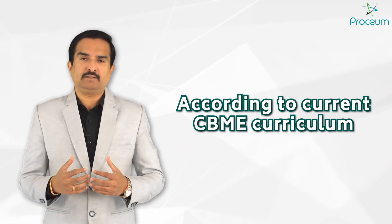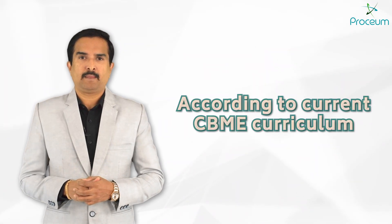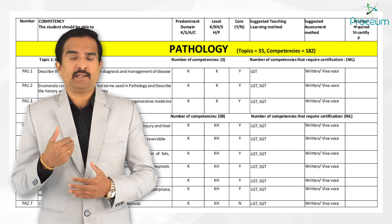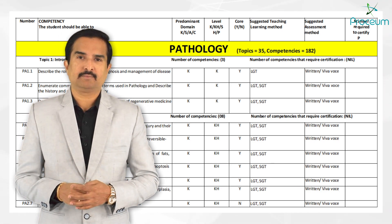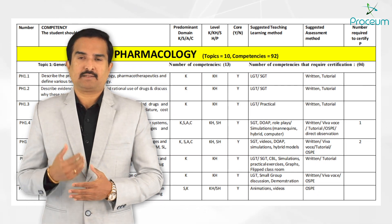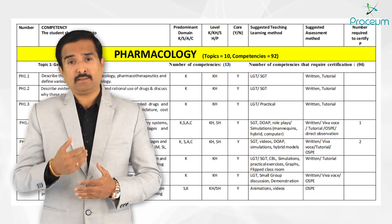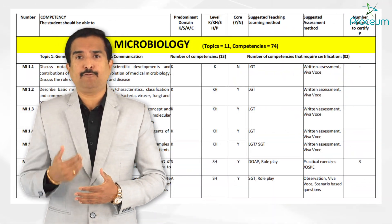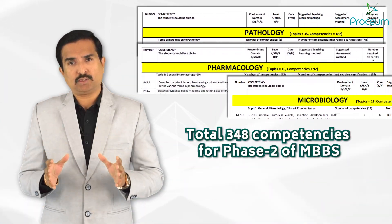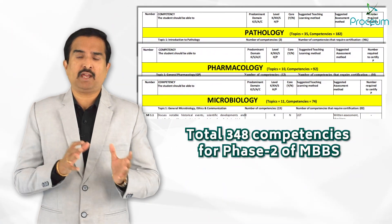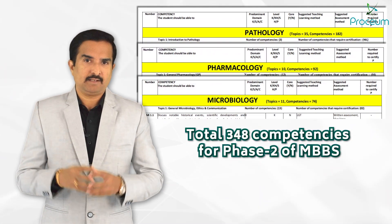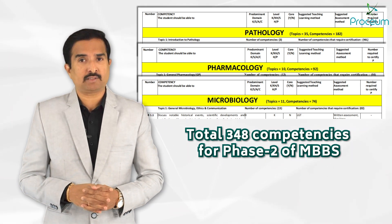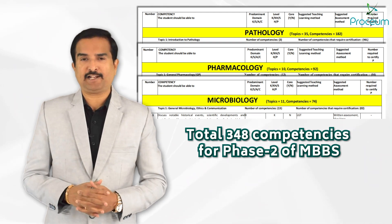In the current CBME curriculum, pathology includes 35 topics and has 182 competences, pharmacology consists of 10 topics with 92 competences, and microbiology covers 11 topics with 74 competences. In total, Phase 2 comprises 348 competences designed to provide students with an integrated understanding of disease processes, pharmacological interventions, and microbial factors.